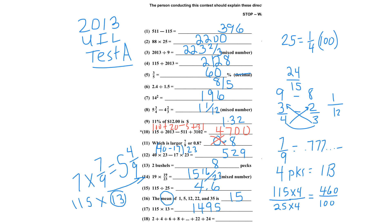Number 18: the sum of even consecutive integers is n times n plus 1, where n is the number of terms. There are exactly 12 terms, so 12 times 13 is 156.